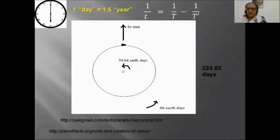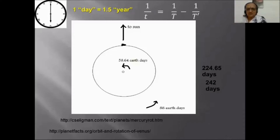In the case of Venus, there is yet another possibility: 224.65 days as the rotation period and 242 days as the revolution period, so you get a completely different answer. It is fun working it out.